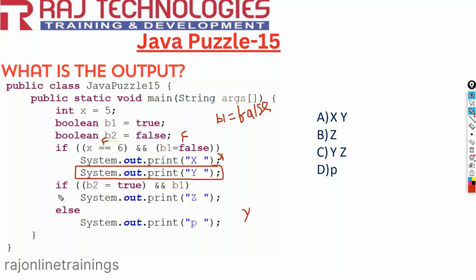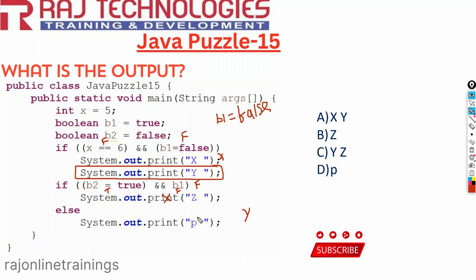Then we come to the next if condition: if b2 equal to true and b1. What is the value of b2? Initially it is false, but since we did an assignment it becomes true — so this condition is true. And b1? Its value is false. So true AND false is false. This condition is false, so we go to the else part and print p.